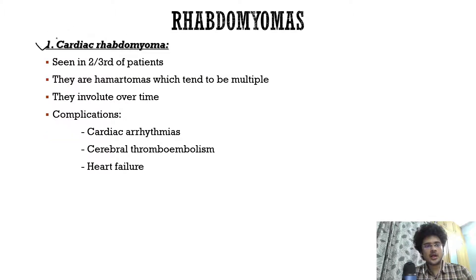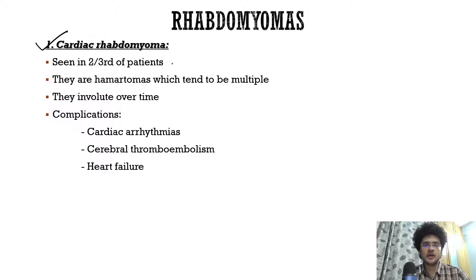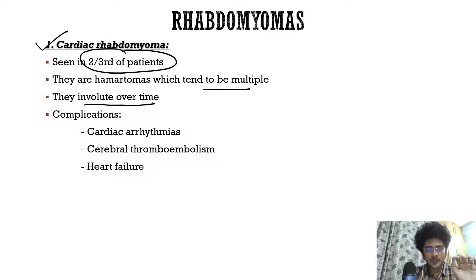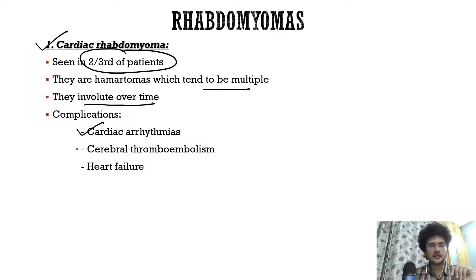Cardiac rhabdomyoma is a hamartoma, not a tumor, present in two-thirds of tuberous sclerosis patients. They tend to be multiple and generally involute over time, being asymptomatic most of the time. Complications include cardiac arrhythmias, cerebral thromboembolism, and heart failure.